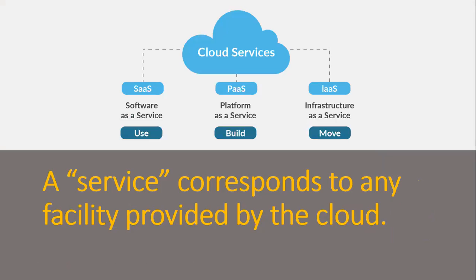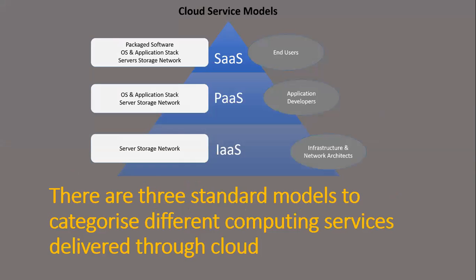There are three cloud service models: SaaS, PaaS, and IaaS. SaaS, that is Software as a Service, is normally used by the end user. Platform as a Service is used by an application developer. And Infrastructure as a Service is used by infrastructure and network architects.